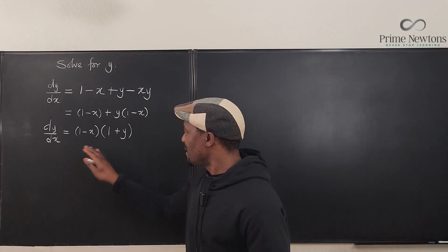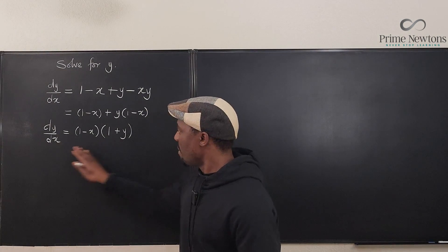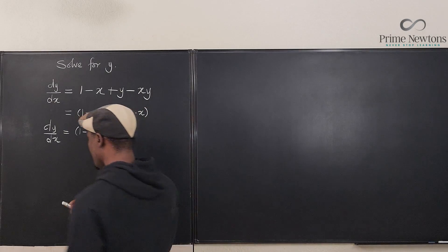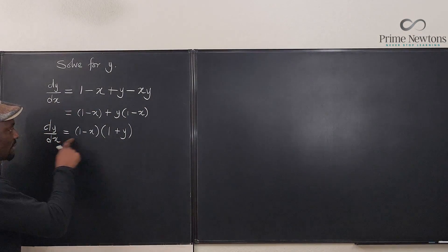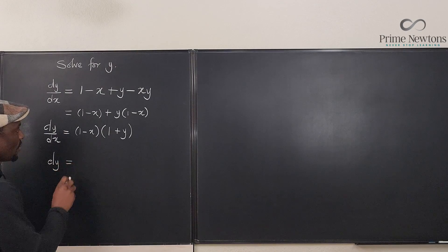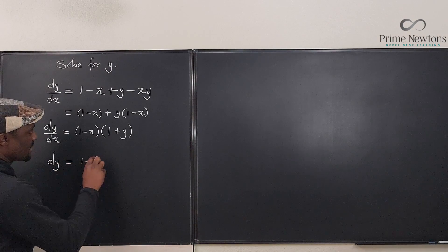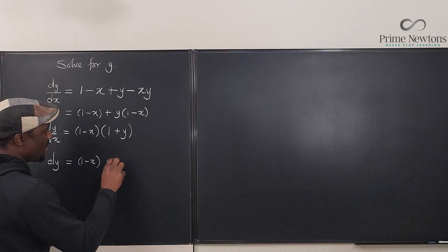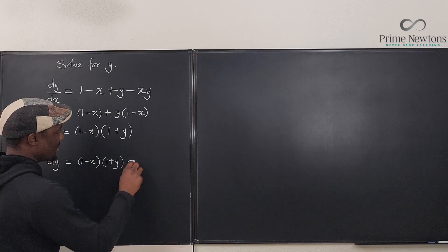Let's separate this. Let's move things this way so that if we multiply both sides by dx, we're going to end up with dy equals (1 minus x) times (1 plus y) times dx.